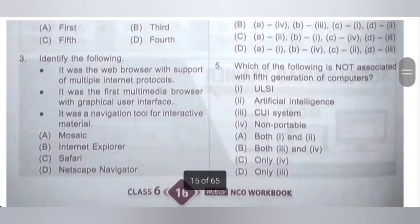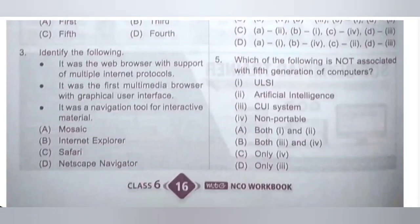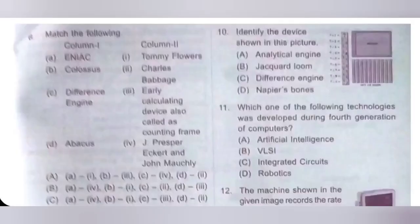5th question: Which of the following is not associated with the 5th generation of computers? 1. ULSI; 2. Artificial Intelligence; 3. CUI System; 4. Non-portable. The items not associated with 5th generation computers are CUI System and non-portable, because 5th generation computers are portable. So only 3 and 4 are not associated. Option B is the correct answer.